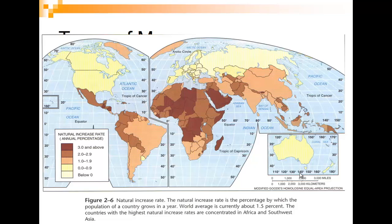This goes from yellow all the way up to brown. Brown is the darkest, meaning the highest, and yellow is the lightest, meaning the lowest. So even if I cover up this legend here, you can still see what's going on with the map.